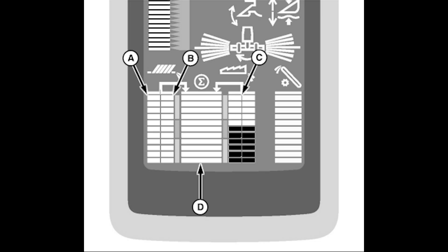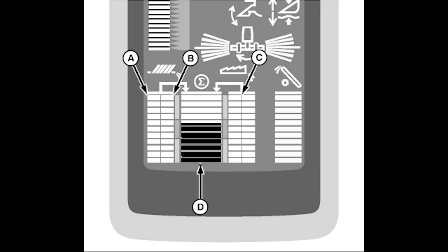STS machines only have one separator sensor, so the right bar graphs of the display are linked together. Total loss is calculated and displayed on the wide bar graph in the middle of the display.